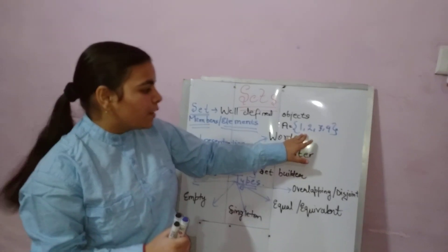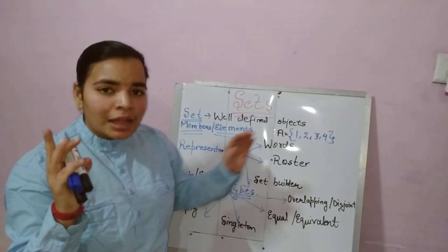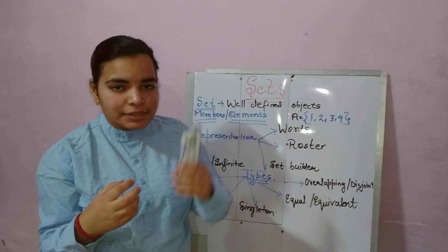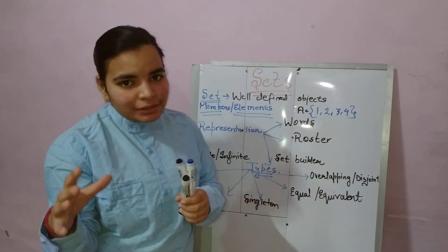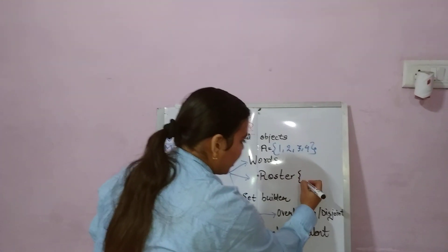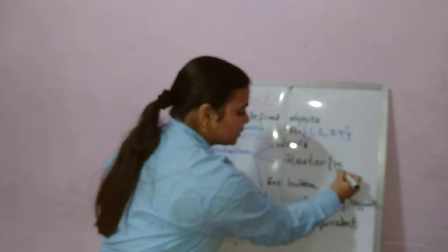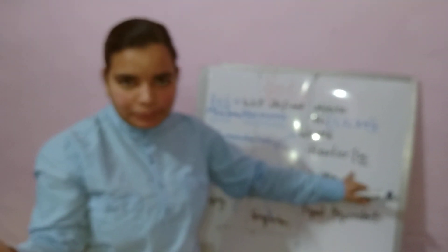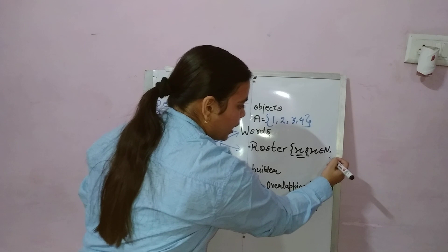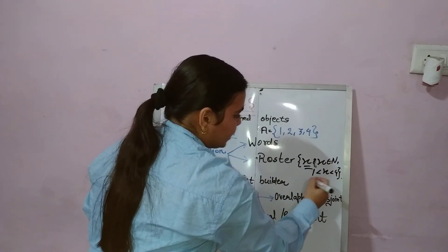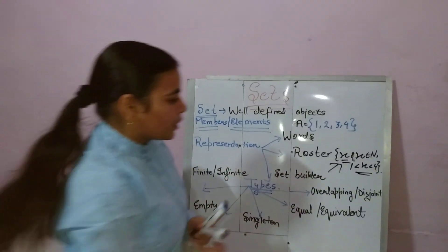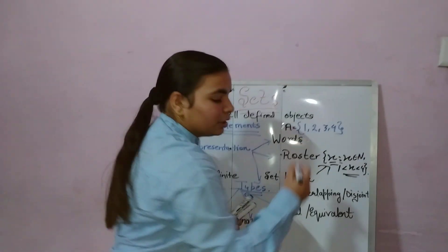For example, A is equal to {1, 2, 3, 4} — this is the tabular or roaster form. The third representation is the set builder notation. In the set builder notation, it is a combination of the roaster form and words. So you write it like this: put a curly brace, write x — where x is considered to be an element. Then, x such that x belongs to natural numbers and x is lying between 1 and 4 — and close with a curly bracket. You can put a semicolon or a colon for 'such that.'